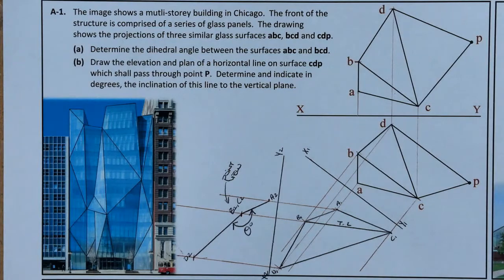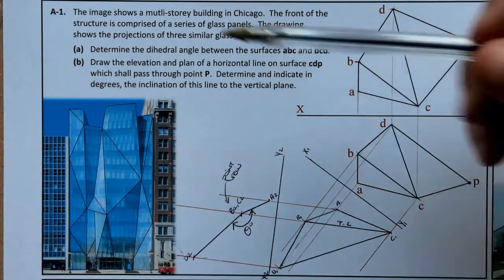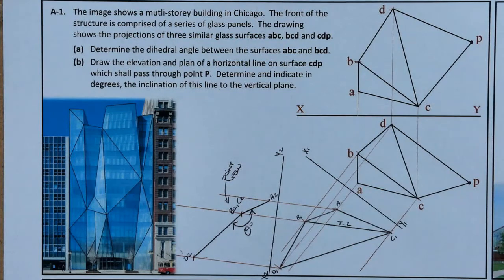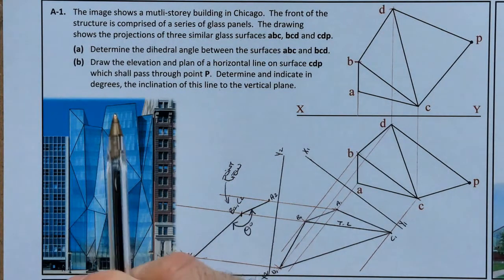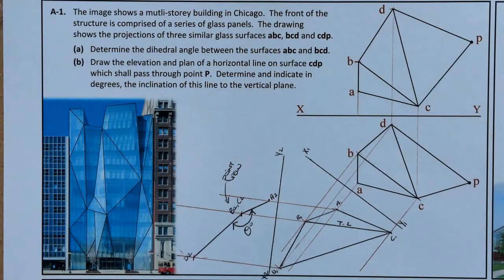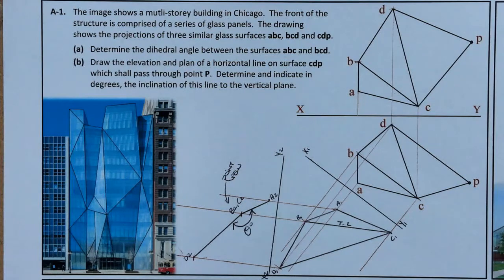So that's Part A done. The dihedral angle often comes up in some aspect of the paper — Section A, B, or C. Part B says: draw the elevation and plan of a horizontal line on the surface CDP which shall pass through point P, and determine and indicate in degrees the inclination of this to the vertical plane.